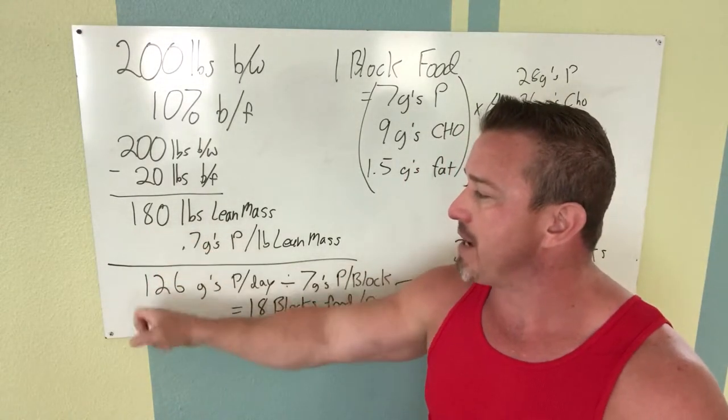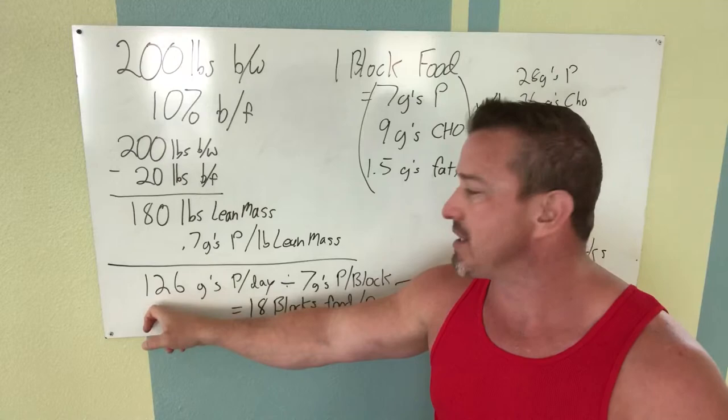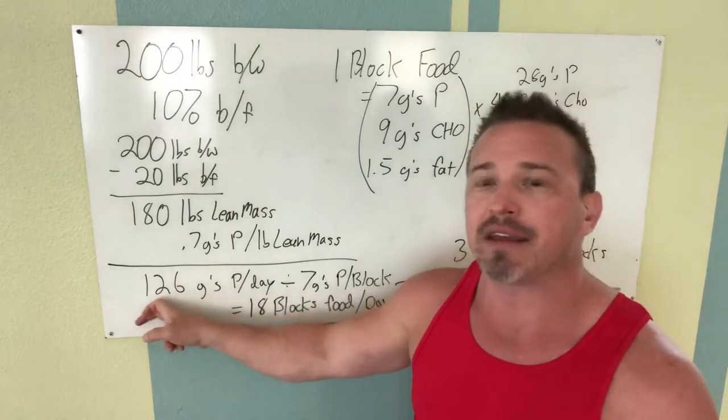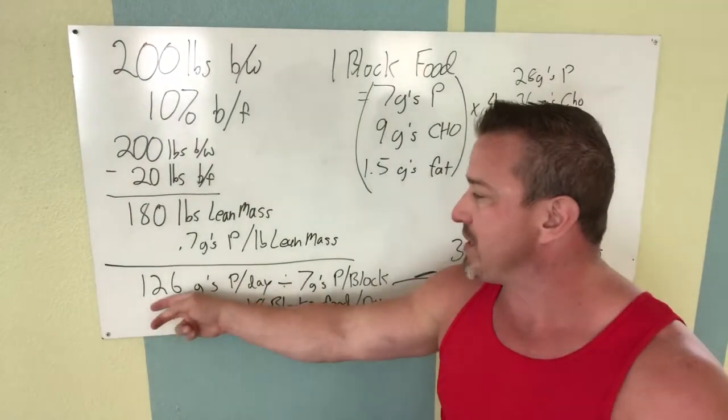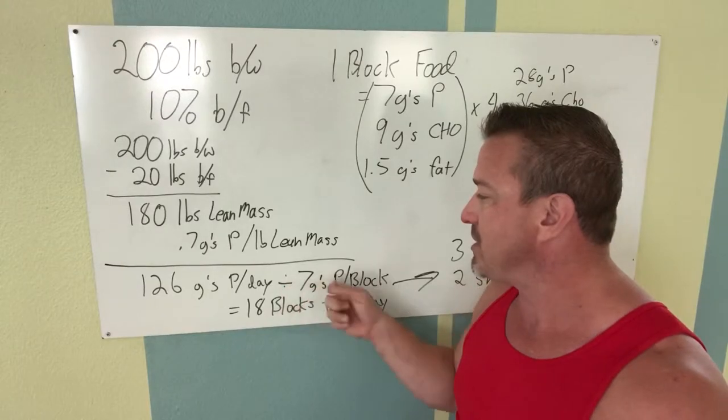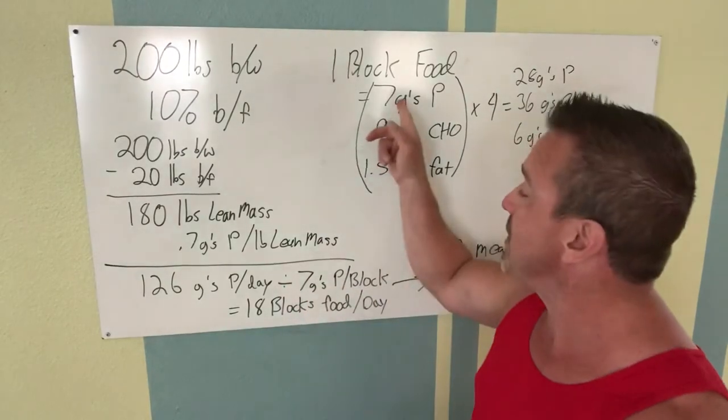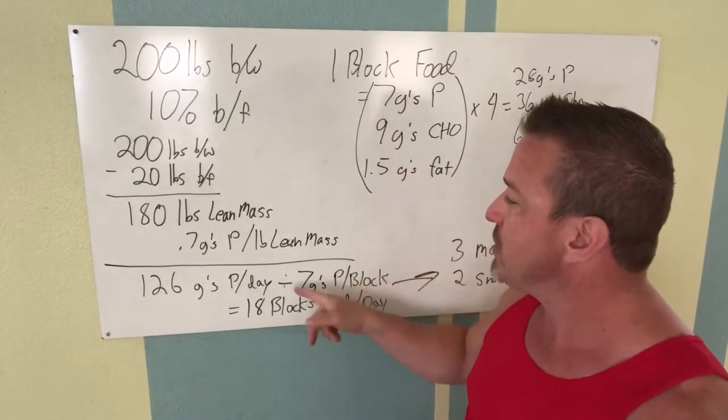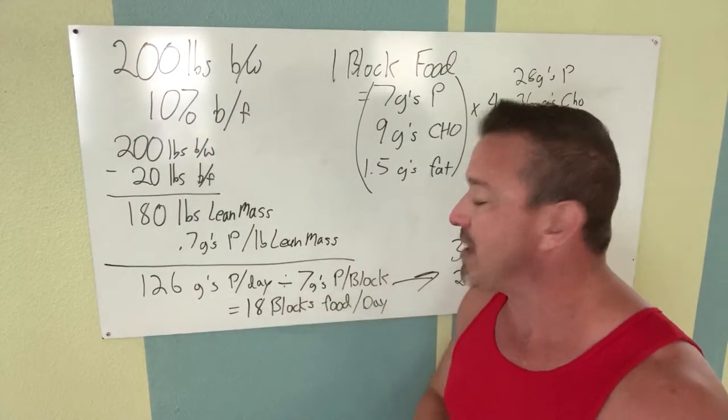So 0.7 grams of protein per 180 pounds of lean mass comes to 126 grams of protein per day. Now we divide that 126 by seven because it's seven grams of protein per block of food.